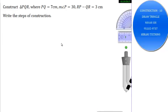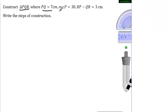Hello friends, in this video we need to draw the triangle PQR where PQ is equal to 7cm, measurement angle P is equal to 30°, and PR minus QR is equal to 3 centimeters.